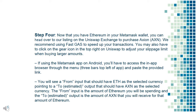You will see a 'from' input that should have ETH as the selected currency, pointing to an estimated output that should have AXN as the selected currency. The 'from' input is the amount of Ethereum you will be spending, and the estimated output is the amount of AXN that you will receive for that amount of Ethereum.